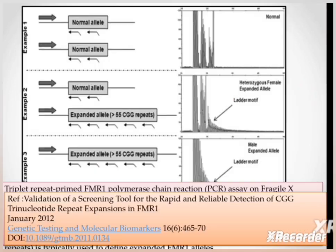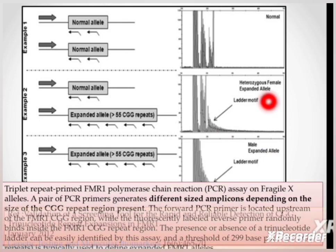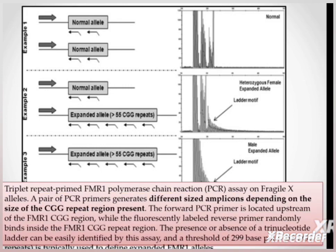This is the result of a triplet primed FMR1 PCR assay on Fragile X alleles. All three conditions are shown here. In the normal condition, different peaks are observed of smaller size as compared to the heterozygous expanded allele condition, where we can observe the peak like normal and a small ladder motif of the expanded allele. In case three of the expanded allele, we observe a ladder motif because of the generation of small-sized amplified products from PCR, from small ones initially to the large ones at the last. In this case, the presence or absence can be easily identified by the threshold value set at 299 base pairs, which was used to define whether FMR allele expansion has occurred or not.